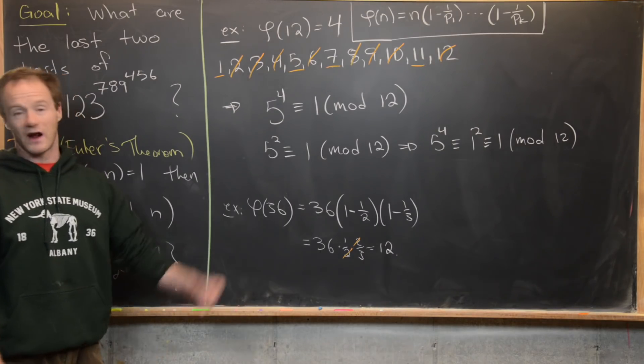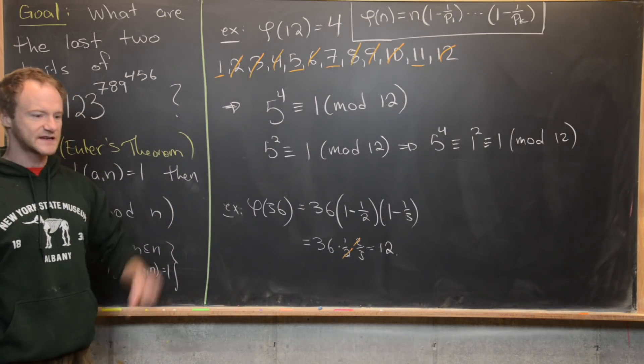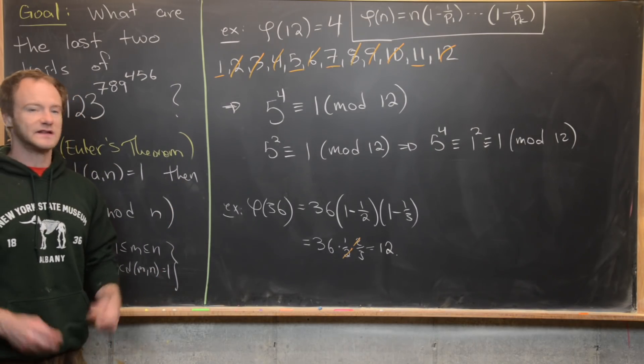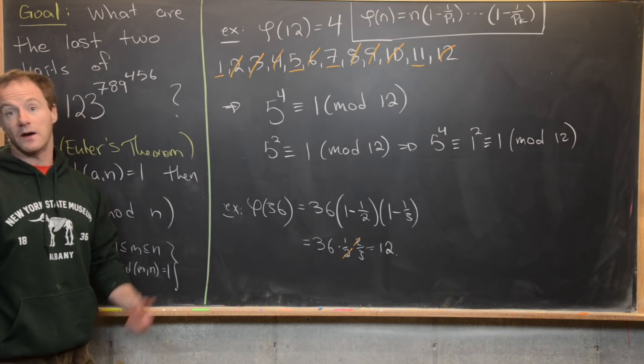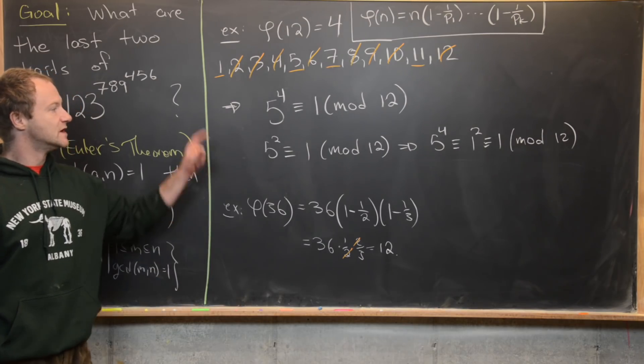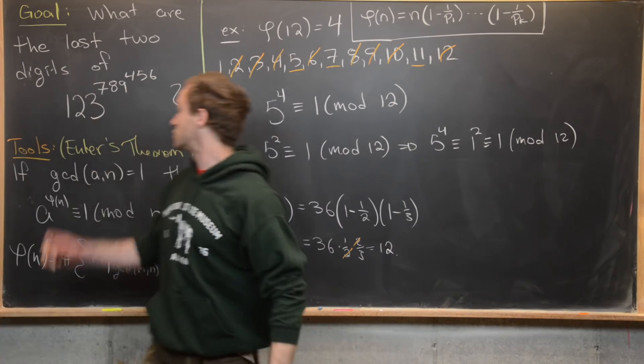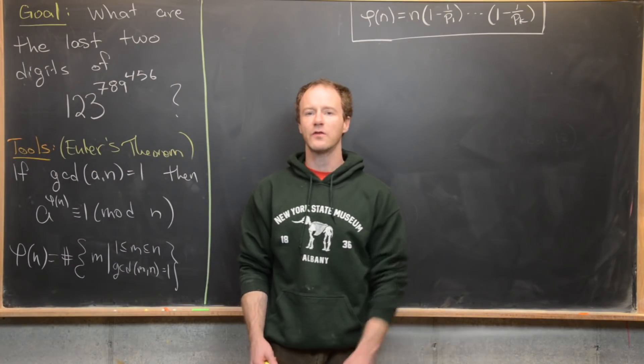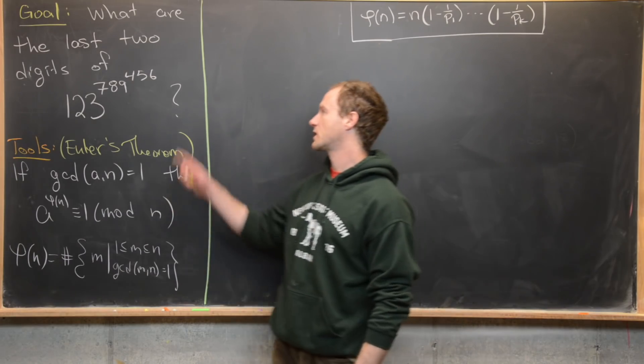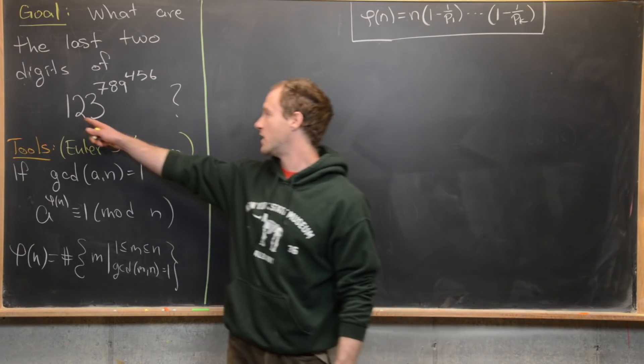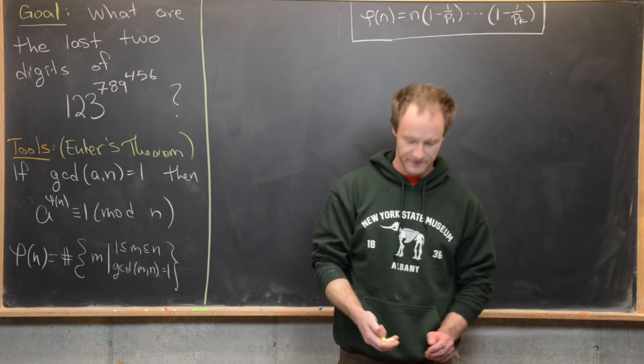I bet we could just write out all of the numbers between 1 and 36, cross out the ones that are not relatively prime to 36, and we'd be left with 12 numbers once we were done with that process. Now that we've done a little bit of review, we're ready to launch into our goal. We're going to calculate the last two digits of 123 to the 789 to the 456.